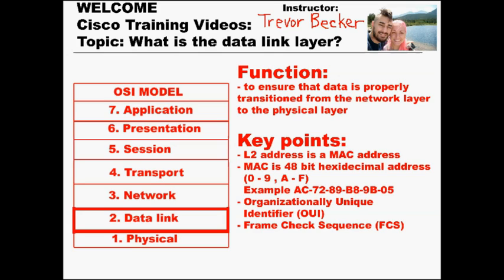You also need to know that a MAC address is a 48-bit hexadecimal address, meaning it's a value displayed using the numbers 0 through 9 and the letters A through F. The first six hexadecimal digits are referred to as the OUI, or the Organizationally Unique Identifier, which is essentially the vendor code. Each vendor will have their own OUI. Think of a MAC address as globally unique, just like your fingerprint.